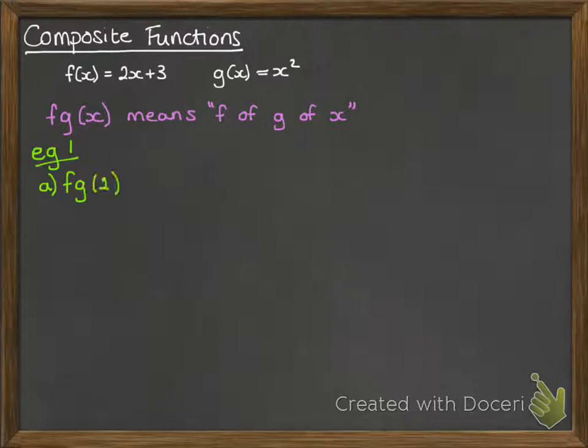These are easier to explain with examples. If we want to do fg(2), we would put 2 into g, that gives us an answer of 4, and then we take that 4 and we put it into the f function, which gives us an answer of 11.